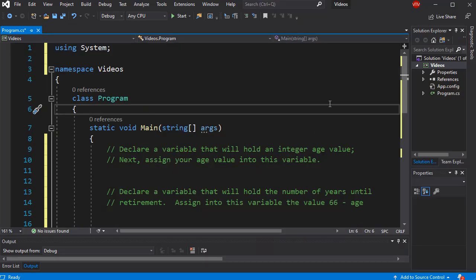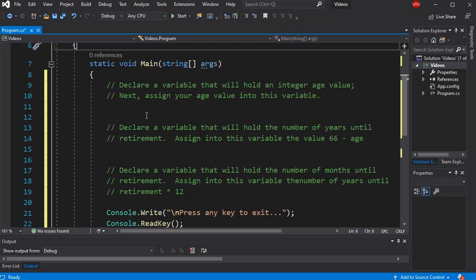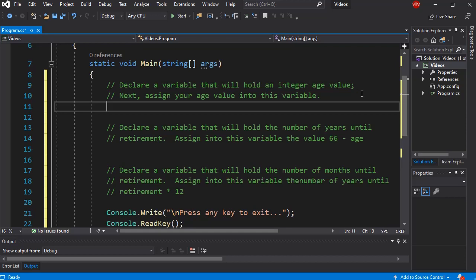All right, I've pulled up Visual Studio here, and here are the questions that I asked. Step one, we said declare a variable that will hold an integer age value, and then next assign your age value into this variable. So if we think about we have integer age value, I'm going to create a variable. I cannot store a value until I make a variable.